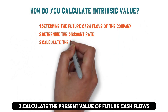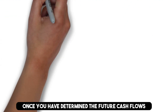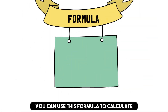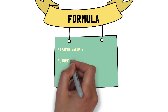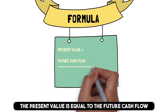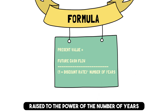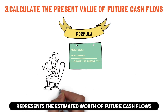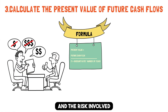Step 3: Calculate the present value of future cash flows. Once you have determined the future cash flows and discount rate, you can use this formula to calculate the present value of those cash flows. The present value is equal to the future cash flow divided by (1 plus the discount rate) raised to the power of the number of years. The present value represents the estimated worth of future cash flows, considering the time value of money and the risk involved.